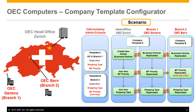OEC Computers prioritise their customers based on specific criteria. Head Office in Zurich and the Geneva Branch share the same definitions for prioritising their business partners. However, Branch 2 in Bern uses additional customer priority definitions to meet the needs of their own local target market. In addition, shipping company agreements are negotiated on behalf of all three companies nationwide, and therefore each OEC company uses the same shipping types. So in order to meet these specific business requirements and share the appropriate data across each company, we need to configure customised templates for these branches.